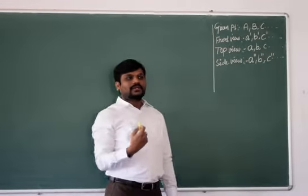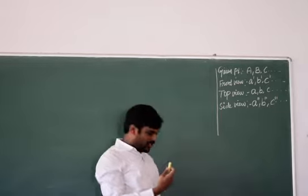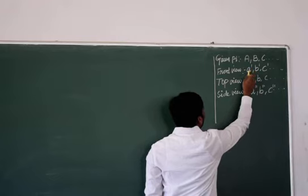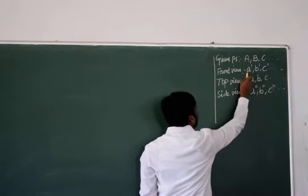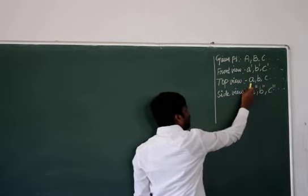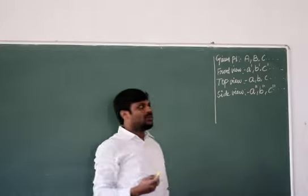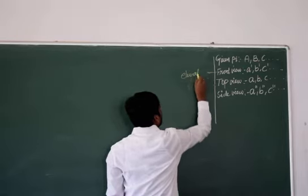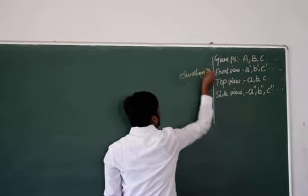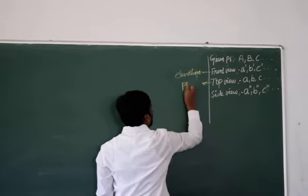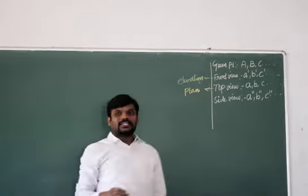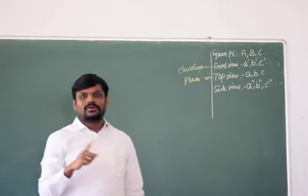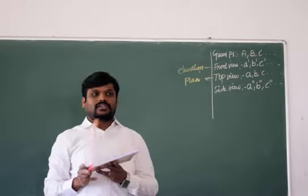Whereas, when I am going to convert the protocol or the nomenclature per different view are represented with small letter dash. That means, if it is A in the given point, its front view will be A dash and its top view will be small a and its side view will be A double dash. Front view is also otherwise called as elevation.